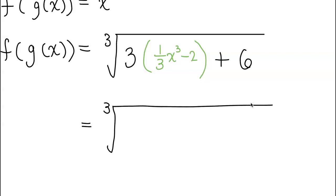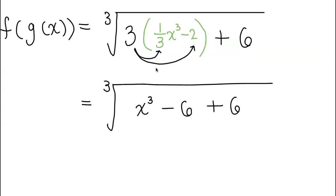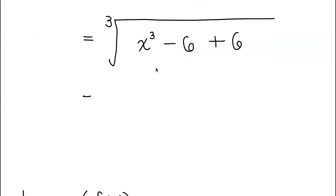So working from inside, if I distribute the 3, I get 3 times one-third x cubed. 3 times one-third is just 1, so I'm going to get 1 x cubed out, and 3 times negative 2 is negative 6.